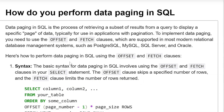How do you perform data paging in SQL? Data paging in SQL is the process of retrieving a subset of results from a query to display a specific page of data, typically for use in applications with pagination.